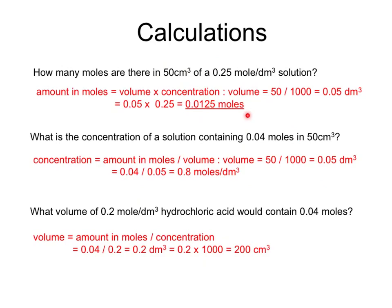Second: what is the concentration of a solution containing 0.04 moles in 50 cm³? The volume needs converting — divide by 1000 to get 0.05 dm³. Concentration = moles ÷ volume = 0.04 ÷ 0.05 = 0.8 mol/dm³.